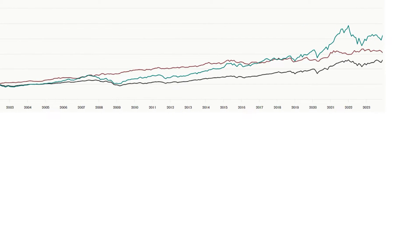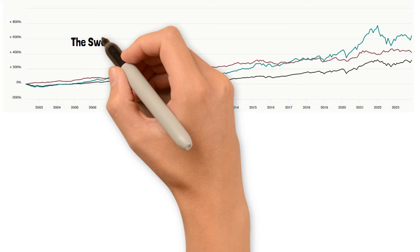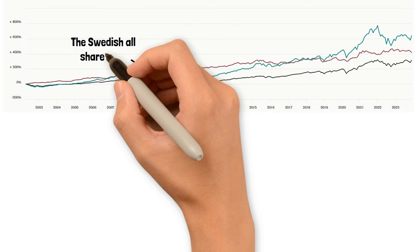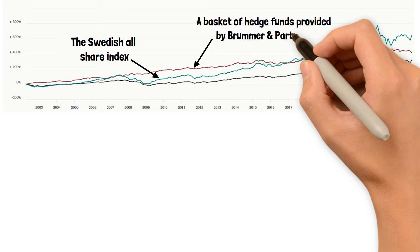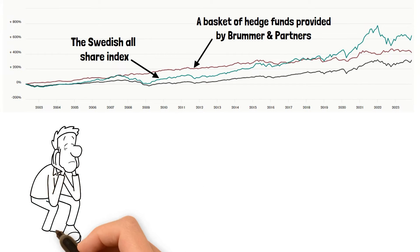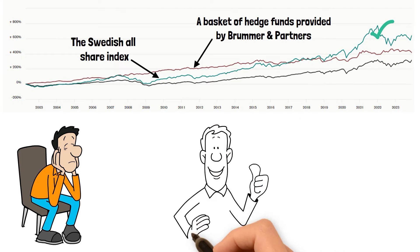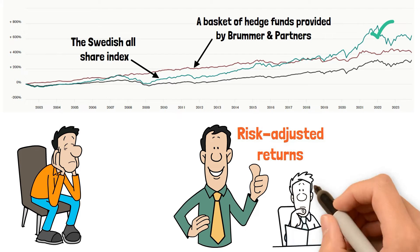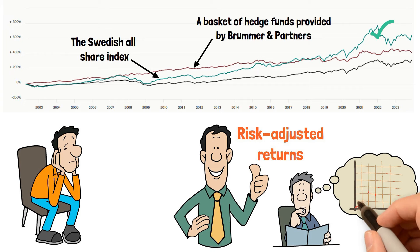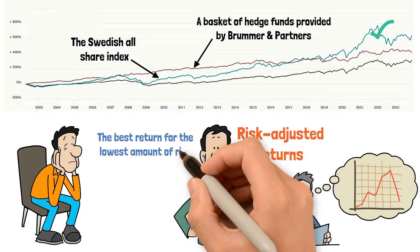Let's provide you with another real-life example. On the screen you see an example of three different strategies. The green line is the Swedish All-Share Index, while the red line is a basket of hedge funds provided by Broomer and Partners. Albeit the hedge funds returned less, you can clearly see that the result was a lot less volatile than solely being invested in Swedish stocks. This is what we're trying to measure by looking at risk-adjusted returns: how much volatility and pain do you suffer to get the end result? Every investor or trader aims to get the best return for the lowest amount of risk.